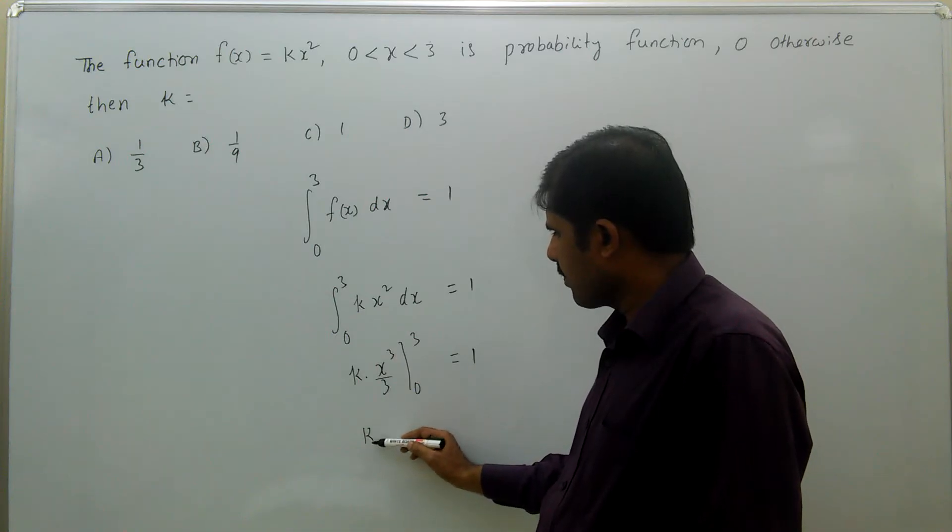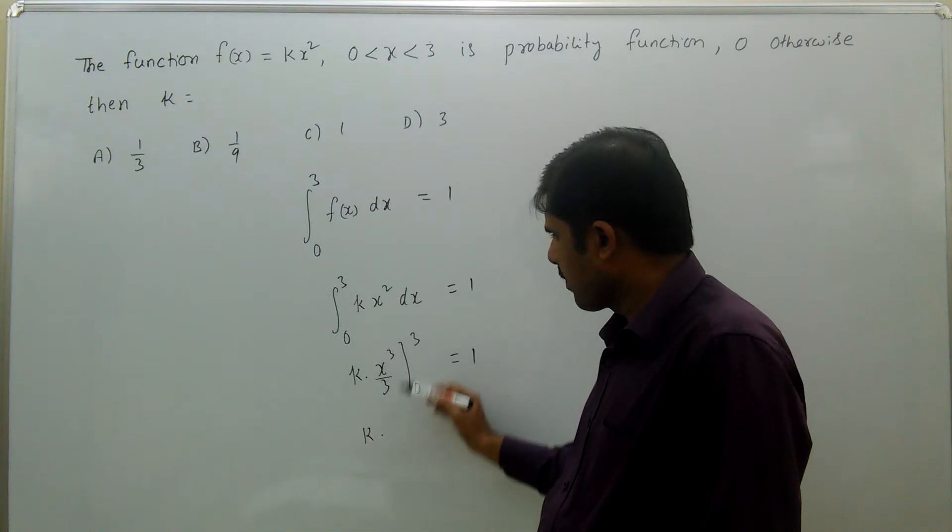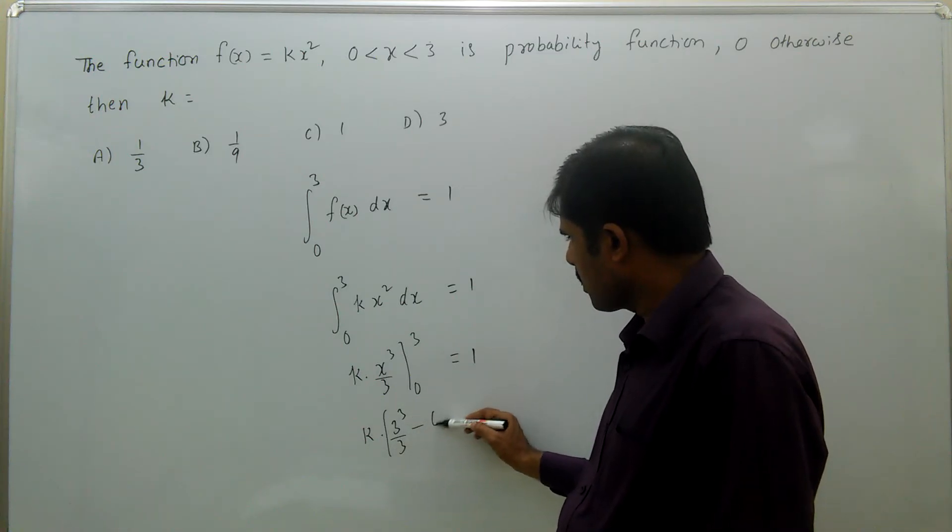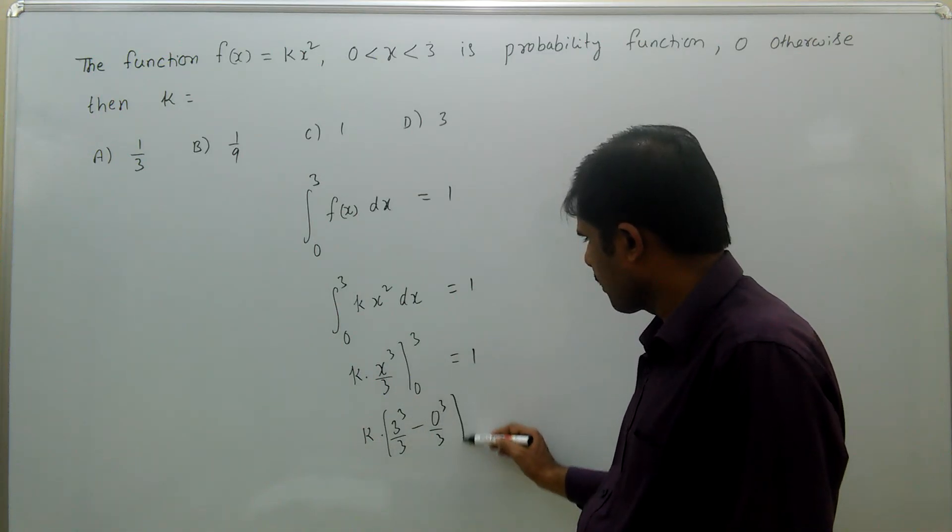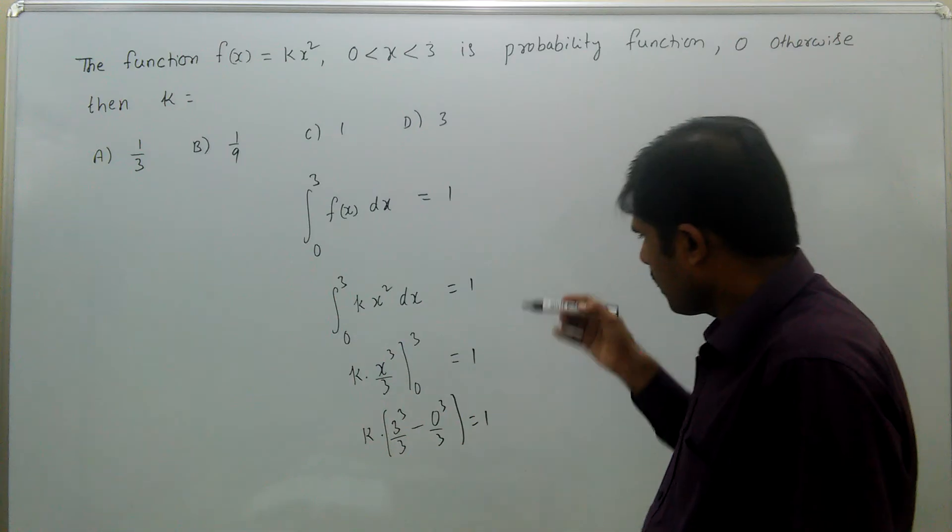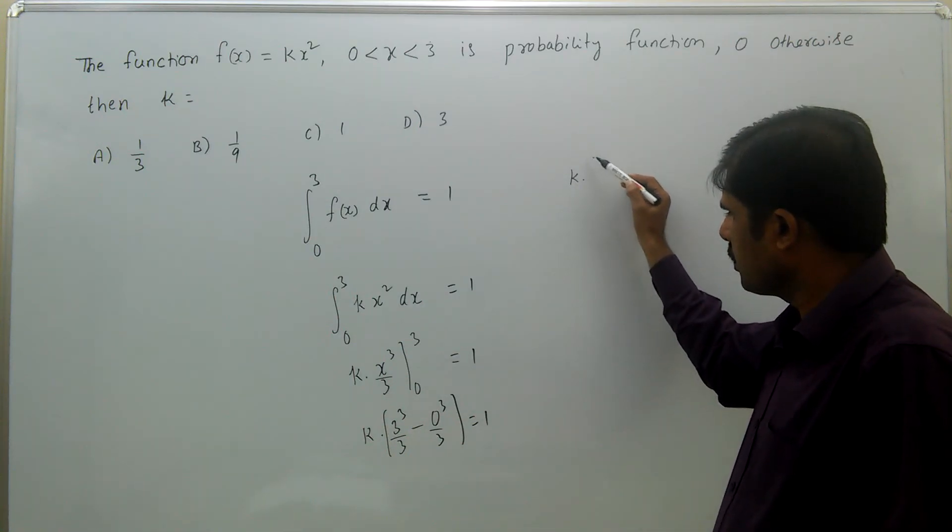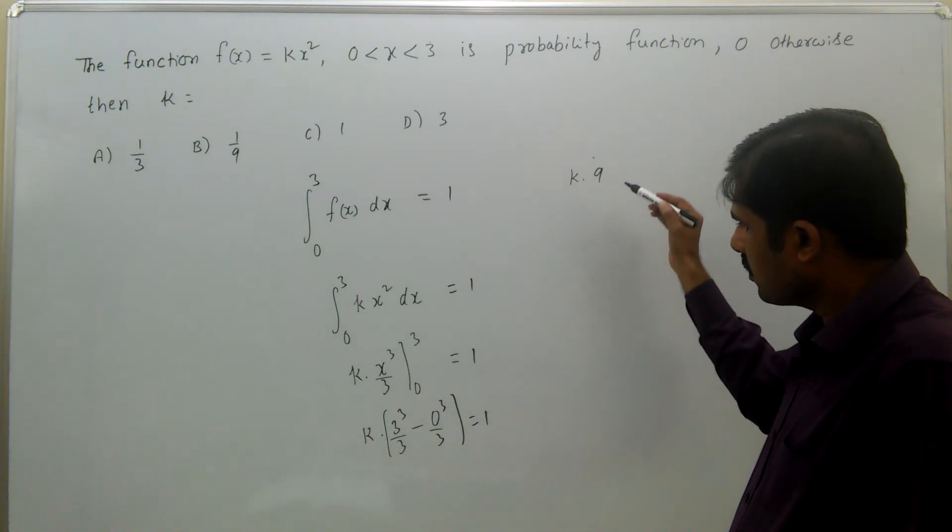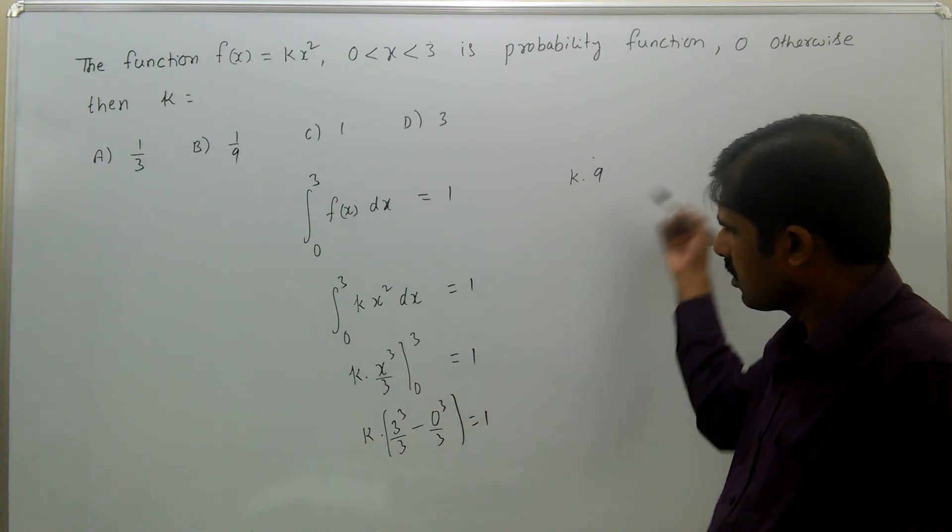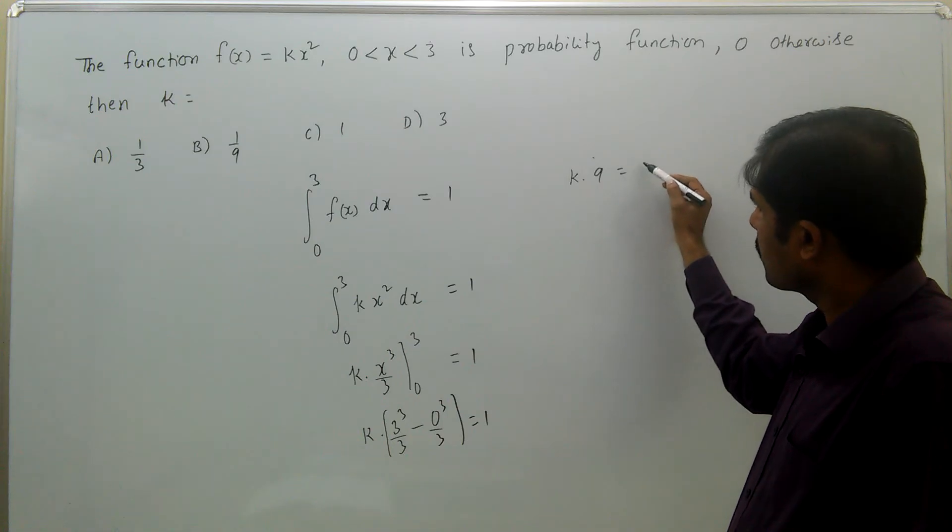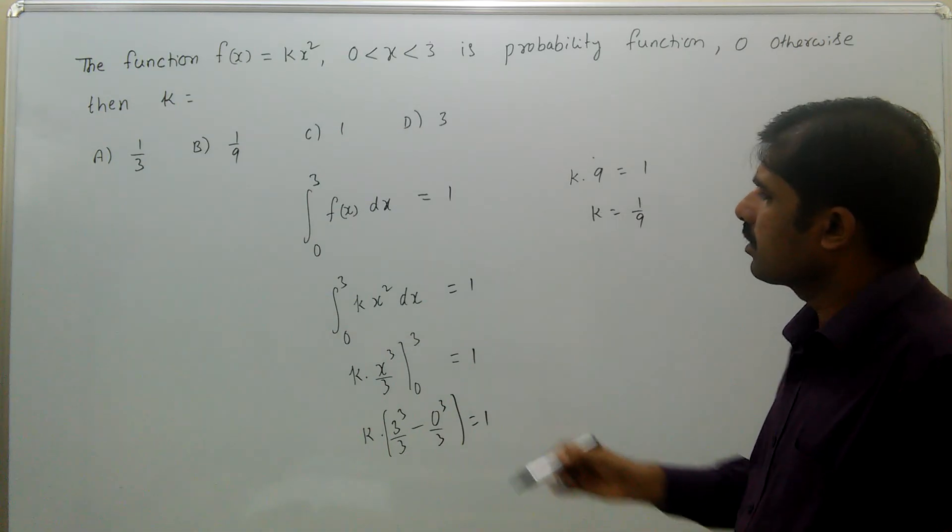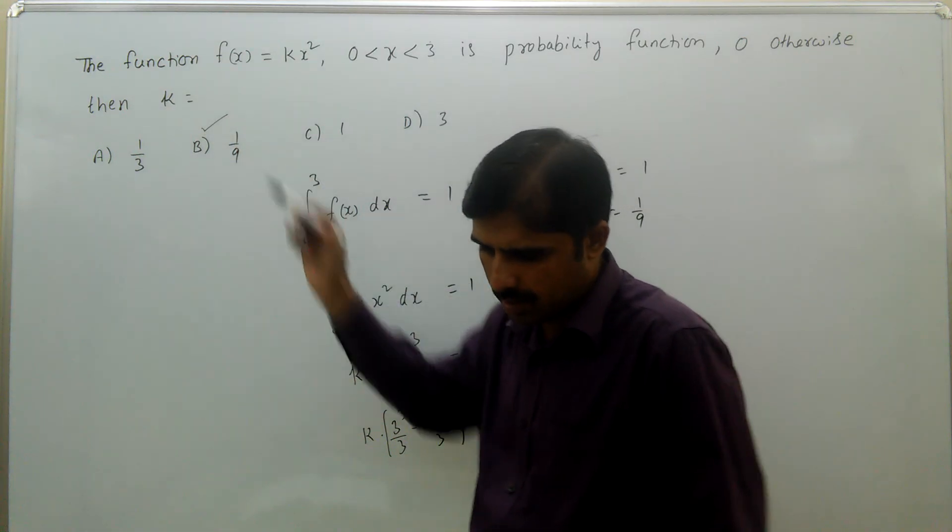That is k times 3³/3 minus 0³/3 equal to 1. That means k times 3³/3 is 9, equal to 1. Therefore k equal to 1/9, that is the correct answer.